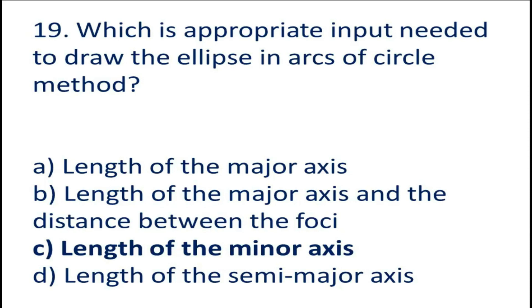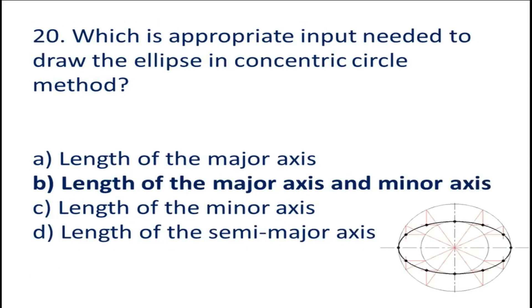Question number 19: Which is the appropriate input needed to draw the ellipse in the arc of circle method? A. Length of the major axis. B. Length of the major axis and the distance between the four sides. C. Length of the minor axis. D. Length of the semi-major axis. The arc of circle method requires the length of the minor axis. Options B and D apply to other methods. So the answer will be C, length of the minor axis.